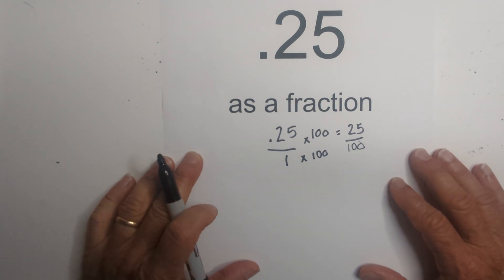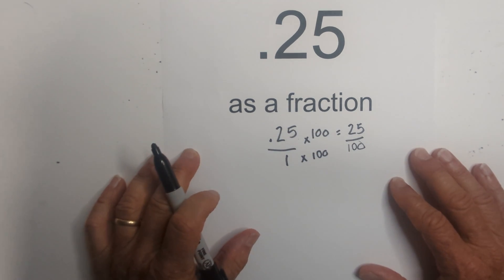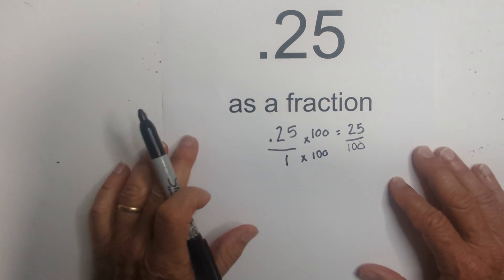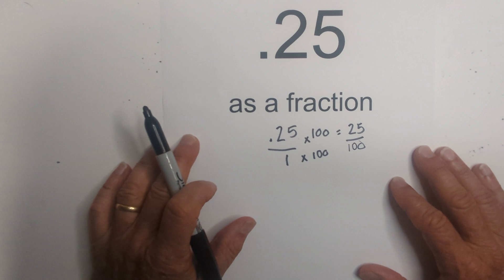The next thing I need to do is simplify, so I need to find the greatest common factor. Well, I know that 25 goes into 100, so 25 is the greatest common factor.